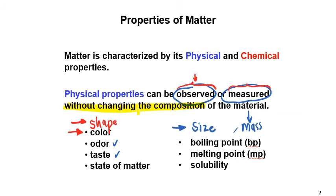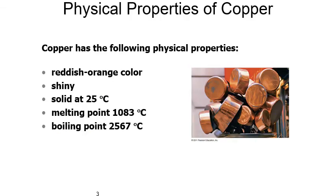We have a variety of physical properties based on observation and measurements, and we know they are not going to change the composition of our materials — we still have the same material. One physical property I want you to pay attention to is states of matter. Whenever you talk about whether an object is solid, liquid, or gas, and we are going to talk about boiling, melting, and solubility in other chapters as well.